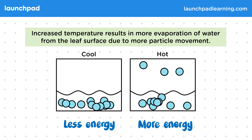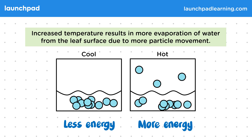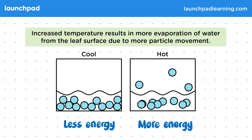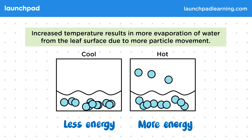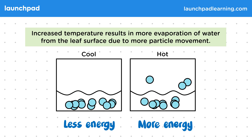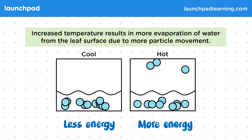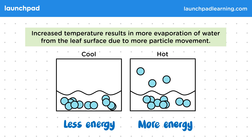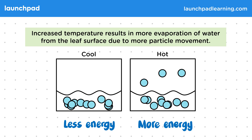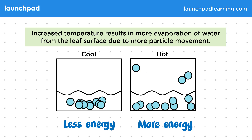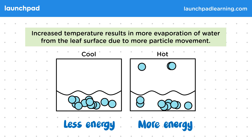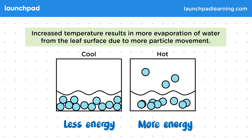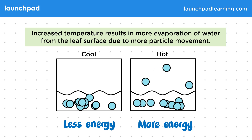For the exam, you need to be able to explain that increasing temperature increases evaporation and therefore increases transpiration. This is similar to sweating on human skin, which cools us down, and has a similar cooling effect on leaves.